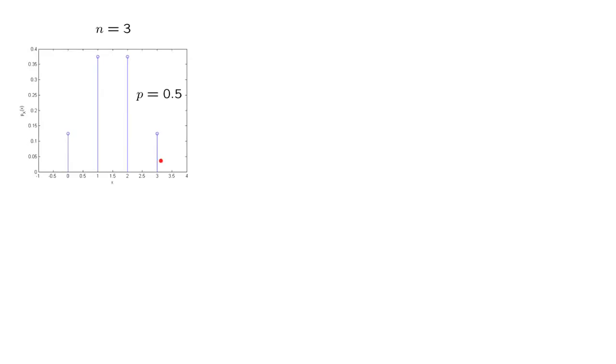Now if we change the number of tosses and toss the coin 10 times, then we see that the most likely result is to have 5 heads. And then as we move away from 5 in either direction, the probability of that particular result becomes smaller and smaller.